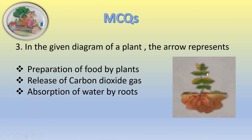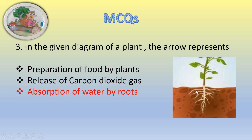Number three: in the given diagram of a plant, the arrow represents — preparation of food by plants, release of carbon dioxide gas, or absorption of water by roots? The correct answer is absorption of water by roots. In this picture, you can see the water has been absorbed by the roots.